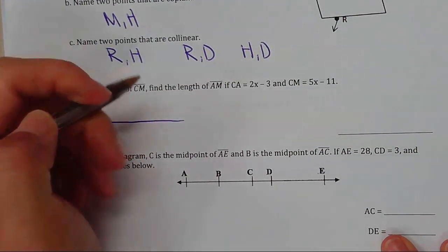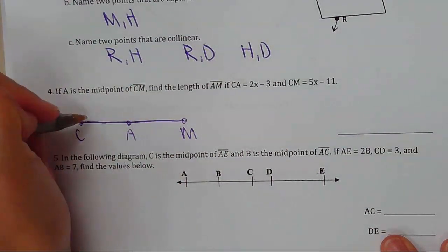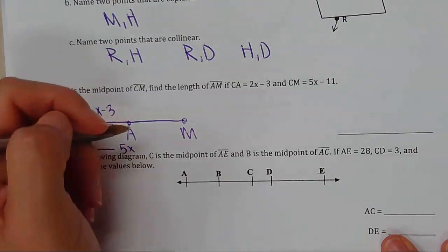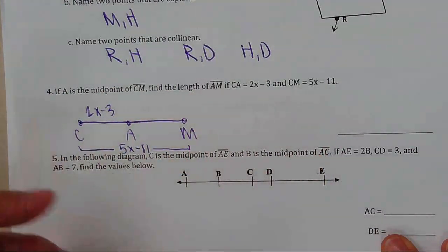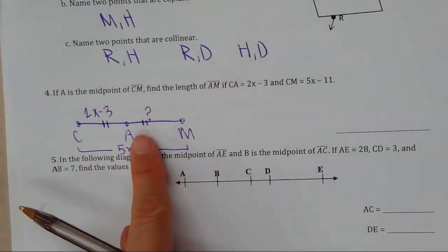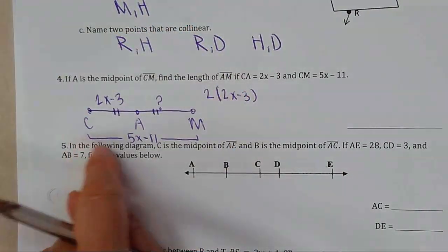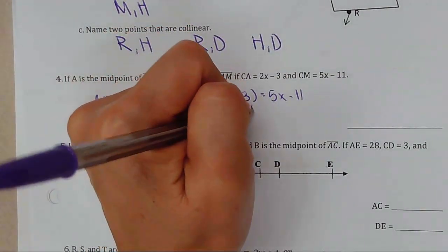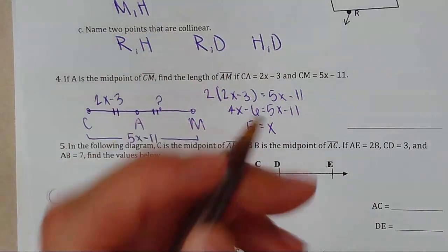A is the midpoint of CM. If CA equals 2x minus 3 and CM equals 5x minus 11, since A is the midpoint, the two segments are congruent. I'm going to double 2x minus 3 and set it equal to the whole segment: 2(2x − 3) = 5x − 11, giving 4x − 6 = 5x − 11.